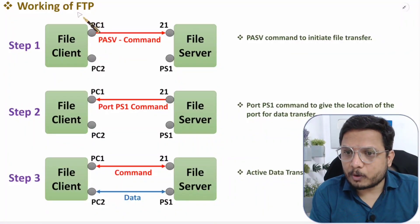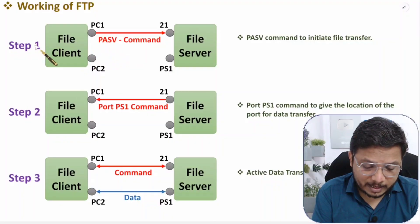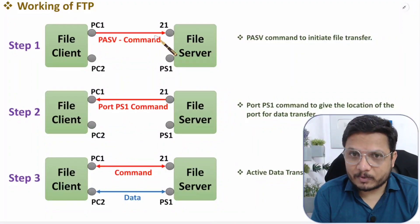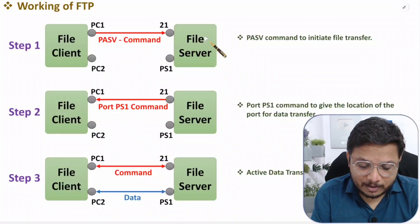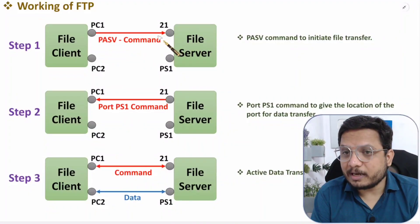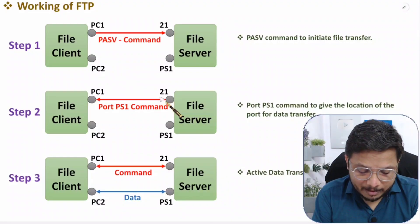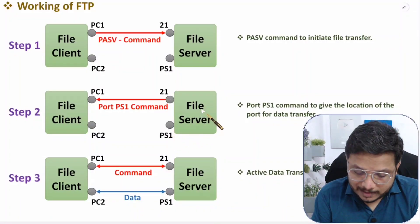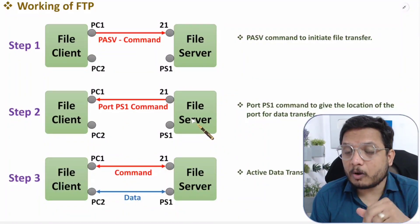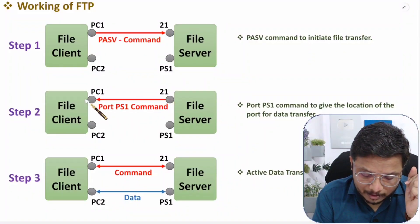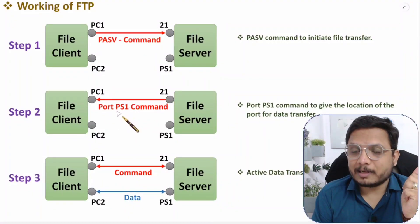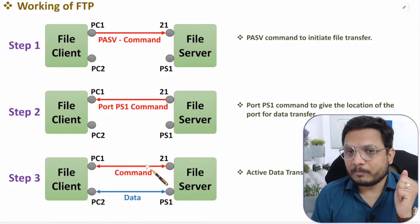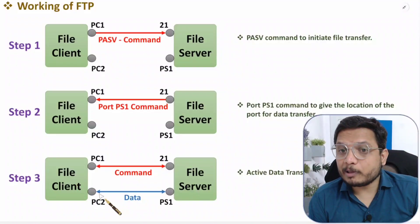In FTP working, first the file client sends a PASV command to port 21 of the file server to initiate file transfer. In step 2, the file server sends a reply mentioning a data port — let's call it PS1 — over which file transfer is possible. The file server is telling the client: on port PS1, data can be transferred. Once that port number reaches the file client, it can transfer data.